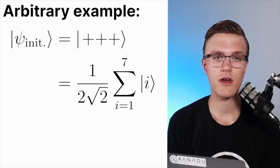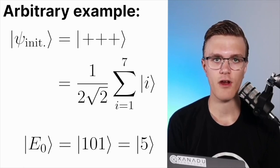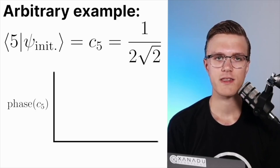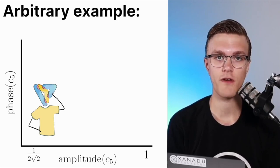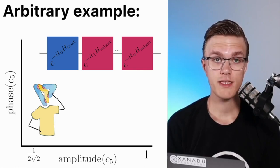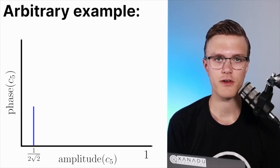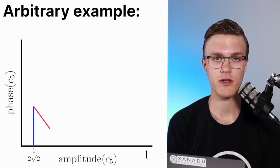Let's look at what time evolving under the cost and mixer Hamiltonians in an alternating fashion for different times looks like pictorially. Let's say we start in a uniform superposition state for three qubits, and the ground state of our cost Hamiltonian is the 101 state. Let's take the y-axis to be the phase of the 101 state and the x-axis to be the amplitude of the 101 state, and look at how they change as we evolve under the cost and mixer Hamiltonians in an alternating fashion. The cost Hamiltonian is usually diagonal in the computational basis, so when we time evolve under it, we're only changing phases, not the amplitude. But then we apply the mixer, which is generally not diagonal, so it changes the phase and the amplitude.